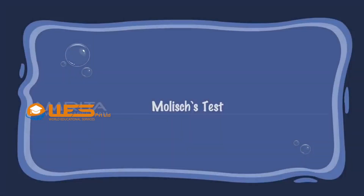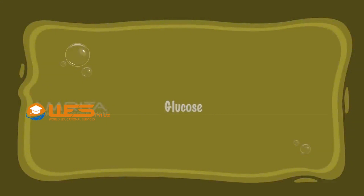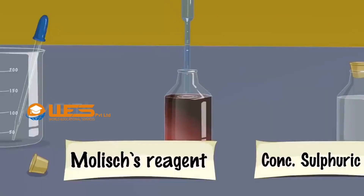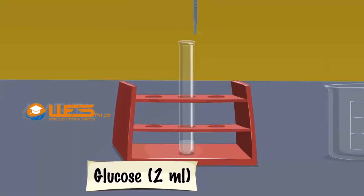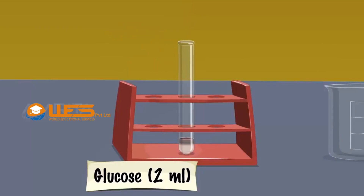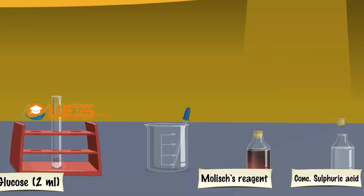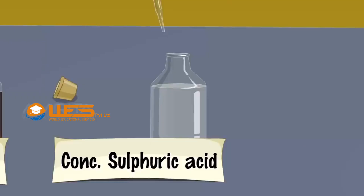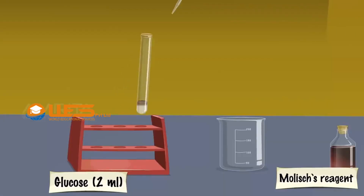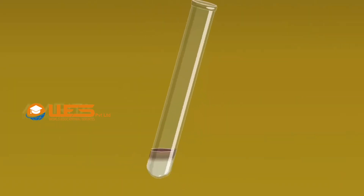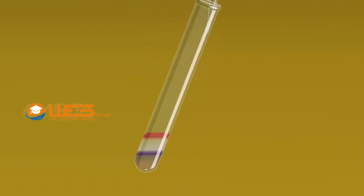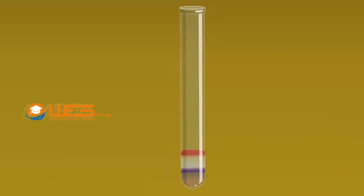Molisch's Test. Glucose. Take Molisch's reagent using a dropper. Add about 6 drops of Molisch's reagent into a test tube containing 2 ml aqueous solution of glucose. Using a dropper, take a few drops of concentrated sulphuric acid. Add it slowly along the side of the test tube without mixing. A red-violet ring is produced at the junction of the two layers — acid layer and test layer — indicating the presence of carbohydrates.